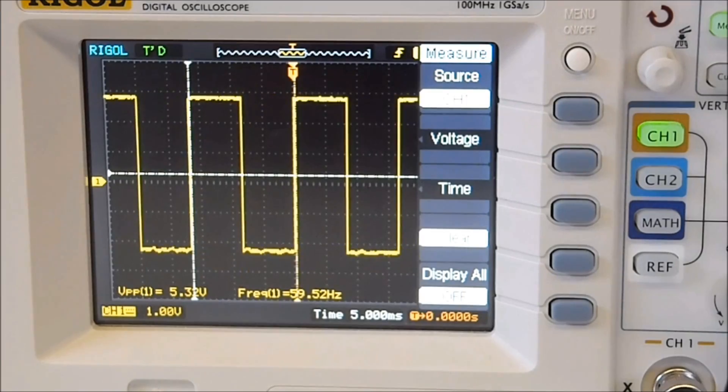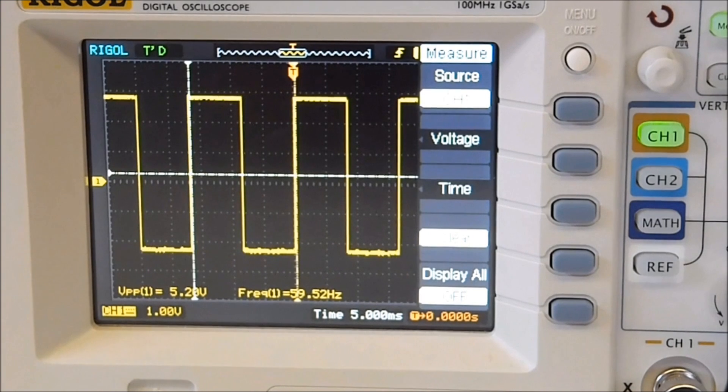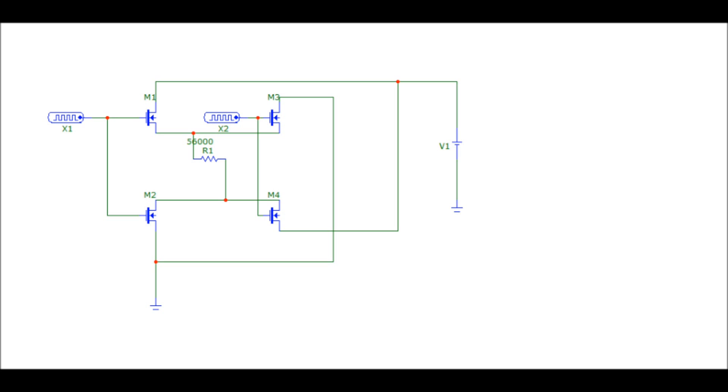By controlling the flow of DC electricity, we're able to alternate the flow patterns, and this is how we get alternating current from a DC power supply. The way we control the circuit is very simplistic.